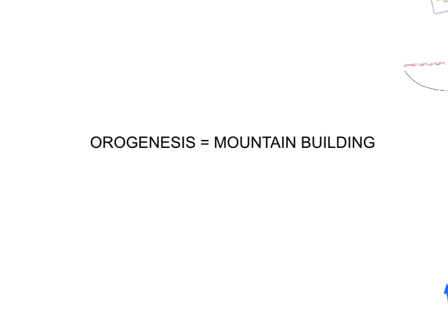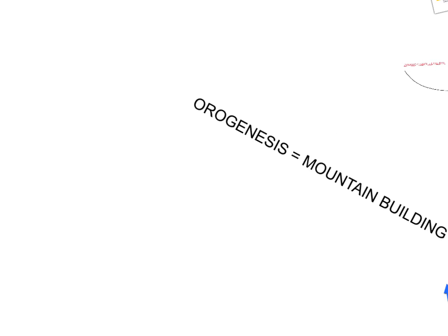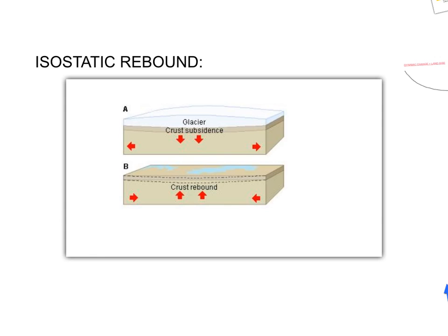The land rises for two reasons. Orogenesis is the building of mountains; the uplift can steepen the river gradient which increases energy for erosion. Isostatic rebound occurs due to the weight of the ice in the last ice age. This caused the crust to become depressed onto the mantle. The melting of the ice removed this weight, which caused the crust to uplift to where it was previously.